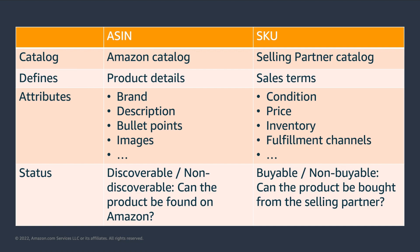So, which data do the ASIN and the SKU define? The ASIN defines product details — attributes that belong to the product, like brand, description, size, etc. For example, regardless of the seller that is offering the item, the brand will not change. And while different selling partners might have different preferences in terms of which images to show or which information to include in the bullet points, Amazon will consolidate this data and generate a unified view. This way, customers browsing the marketplace will receive the best possible experience.